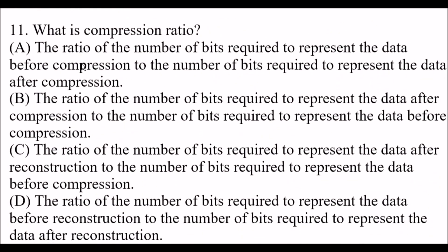Next question: What is compression ratio? This is also a very important question. Option A: the ratio of the number of bits required to represent the data before compression to the number of bits required to represent the data after compression. Option B: the ratio of bits after compression to bits before compression. Option C: the ratio of bits after reconstruction to bits before compression.